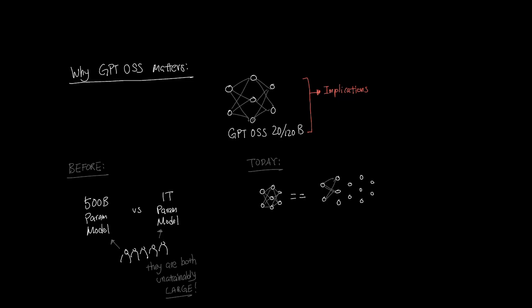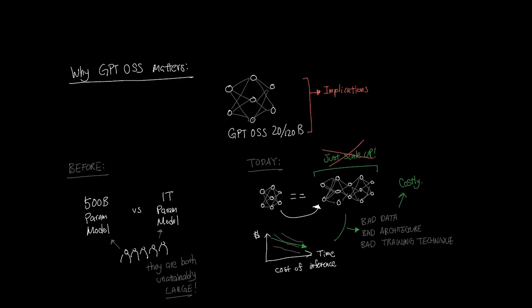But now, you can't just simply hide behind scaling the model to get better performance. Rather, they need to demonstrate that the model is able to fight above its weight class. This is largely due to the fact that the cost of intelligence has been getting cheaper, which means the margin is eroding for LLM providers to train huge models and justify spending large amounts of money to cover up for bad data or bad architecture or bad training technique.